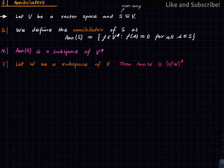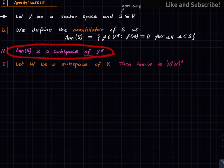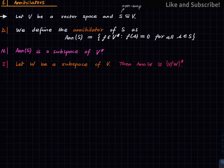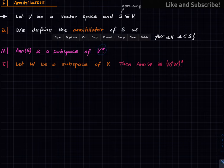One should note that the annihilator of S is a subspace of V*. This does not require S to be a subspace, but no matter what subset you start with, the annihilator will always be a subspace of the dual. This is a simple exercise — just verify that it is a subspace of the dual.